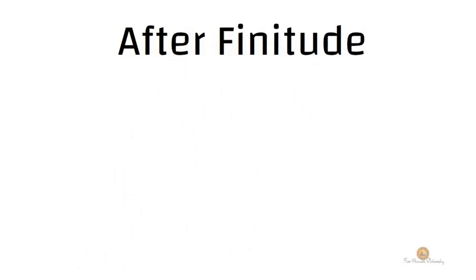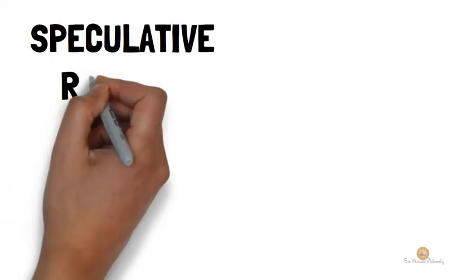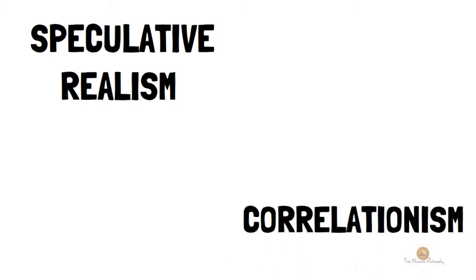Today we're going to be talking about After Finitude by Quentin Meillassoux. Quentin Meillassoux presents a position called speculative realism, which is opposed to a position called correlationism. There are two opposing views, and Meillassoux starts his book by arguing against correlationism.